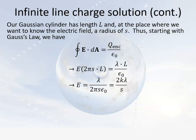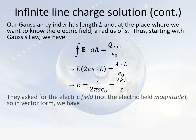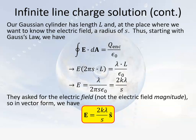So overall, we get E = 2k·lambda / s. This agrees with the result obtained through much harder integration back in the previous chapter. Since we're asked for the electric field, this becomes a vector with a unit vector pointing directly outward from the line. Sometimes we need to express it as a vector field, sometimes not — on a test or AP exam, they'll be clear about what you're supposed to do.